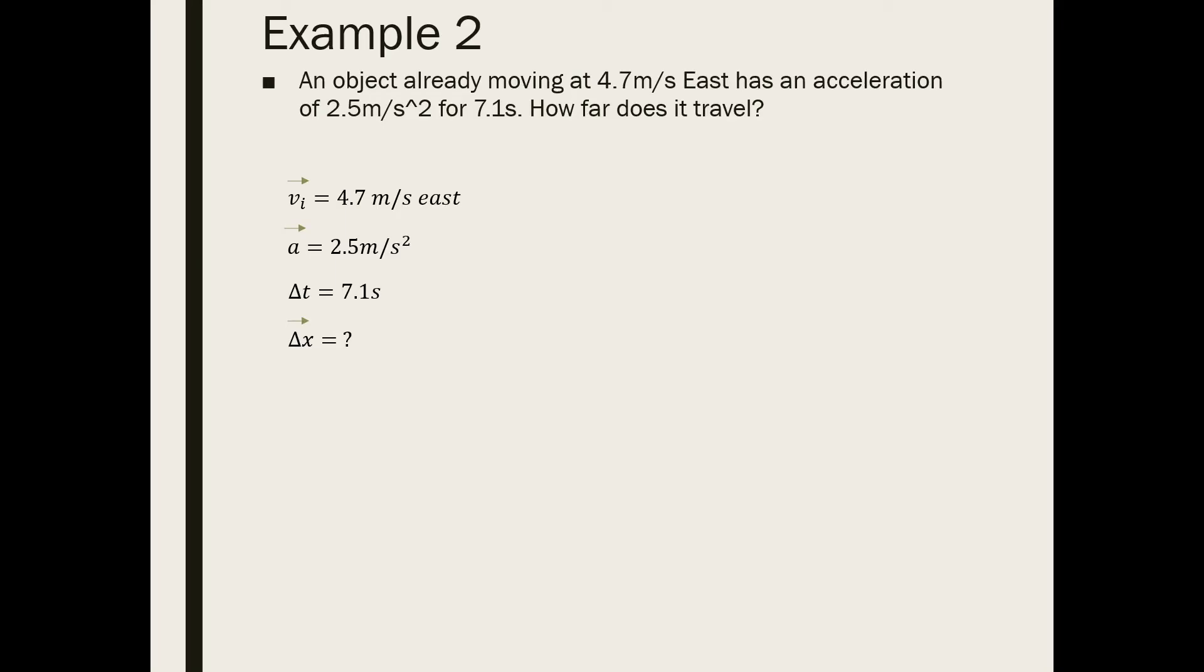Since we have the initial velocity, acceleration, time, and we're looking for displacement, the third kinematic would be helpful. Let's plug in everything. We get delta x equals 4.7 meters per second times 7.1 seconds plus one half times 2.5 meters per second squared times 7.1 seconds raised to the second power. We'll get a displacement of 96.38 meters east.